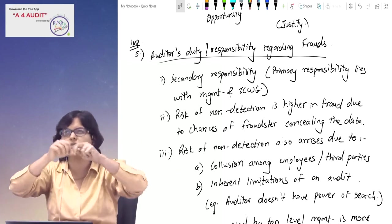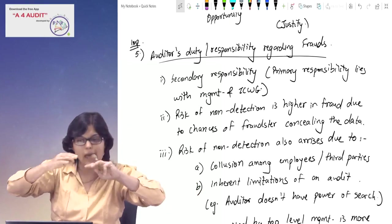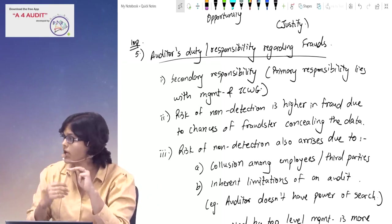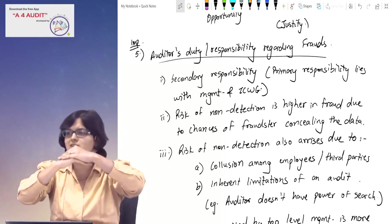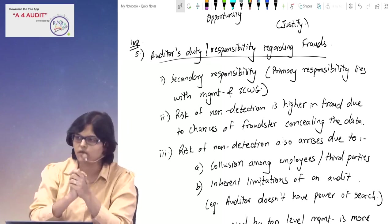If top level management is involved, they will try to conceal frauds. Employees' fraud is very difficult to detect. And one more point: concealment is dangerous, but if there is collusion, it will be more difficult to actually detect a fraud.